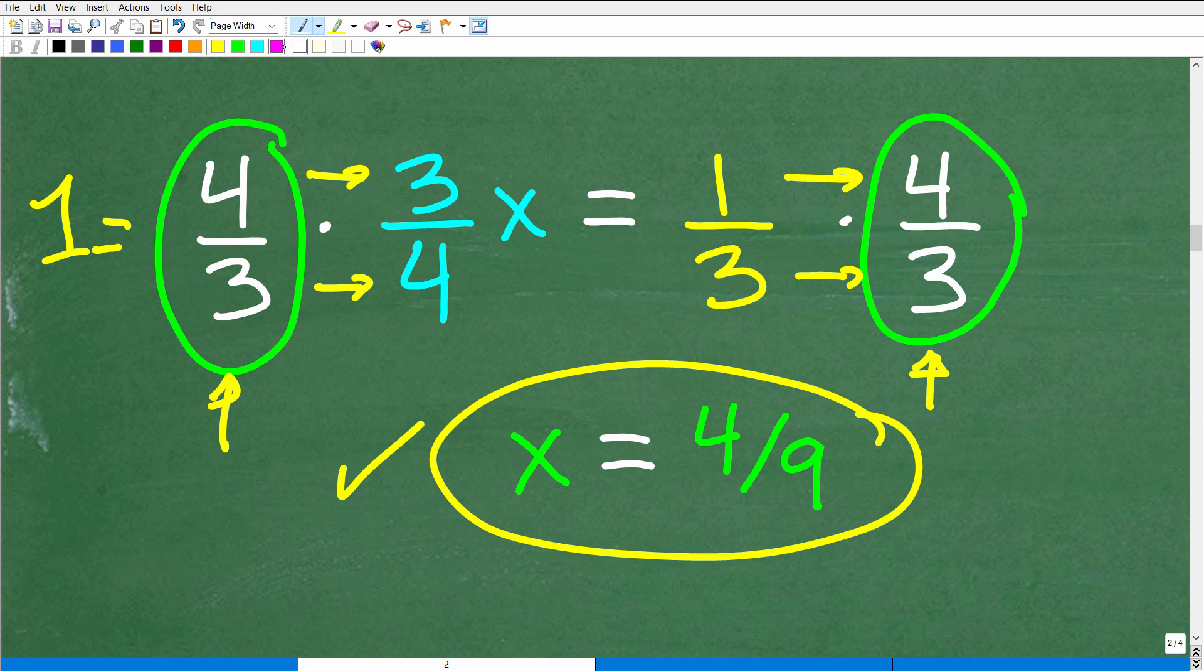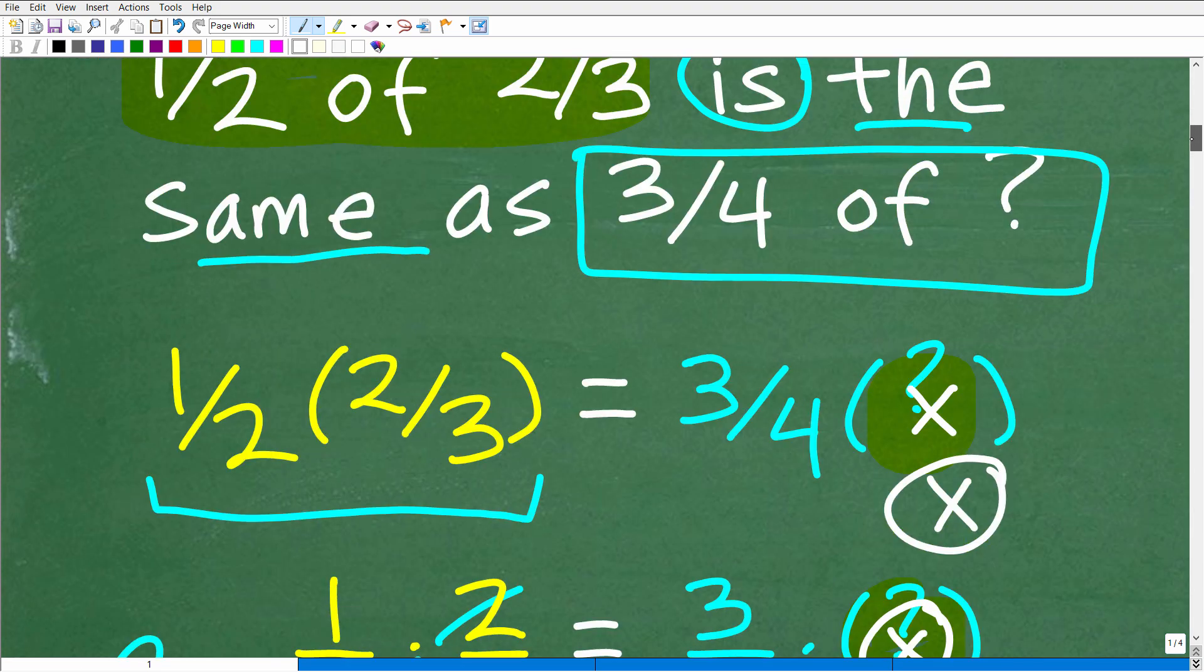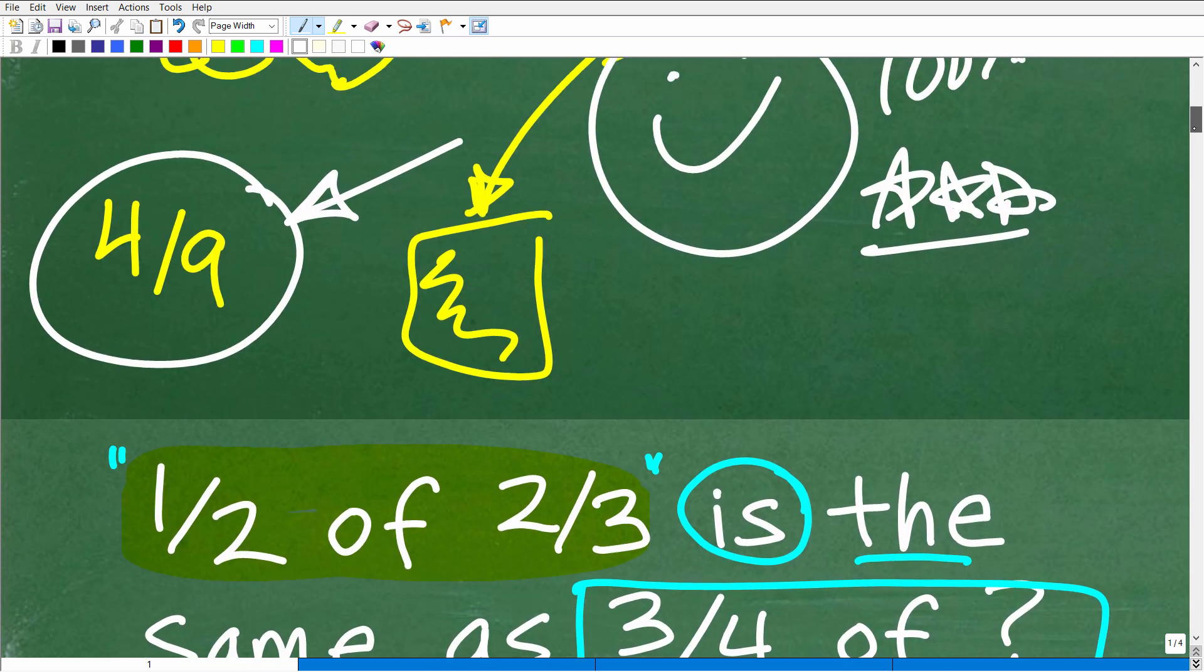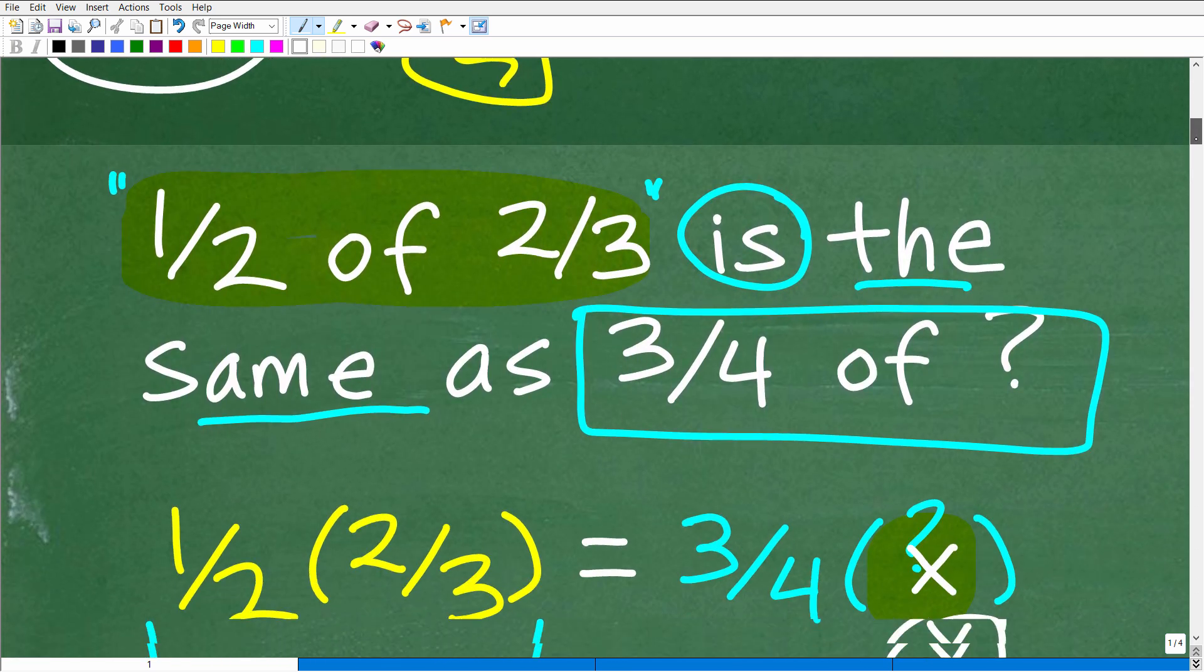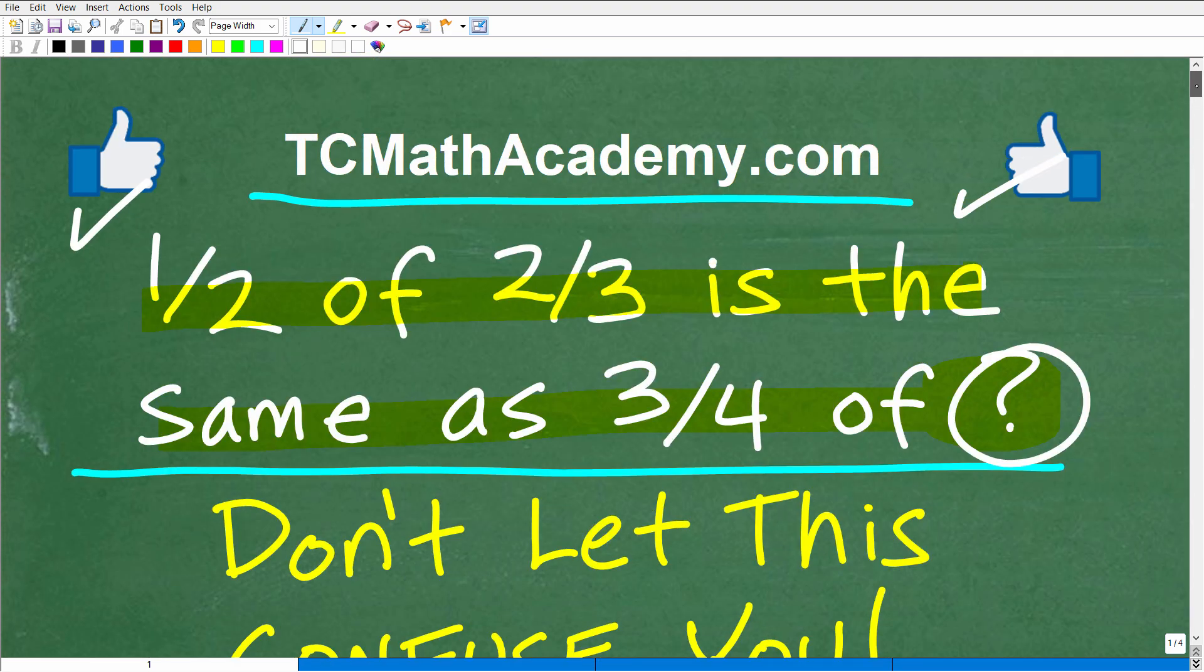All right. So pretty basic algebra problem, but I think the real skill here, again, is translating a verbal problem into an algebraic problem. So if you're struggling with the equation part of this, then that's where you need to improve. If you're struggling a bit with the translating, well, then that's where you have to work on. Okay. Just remember, all these things can be learned.